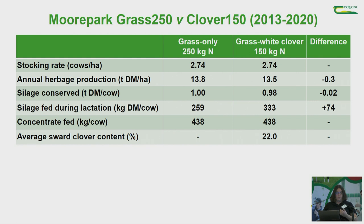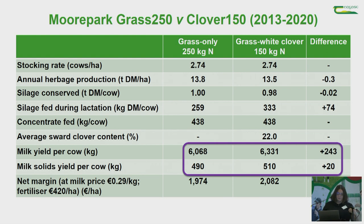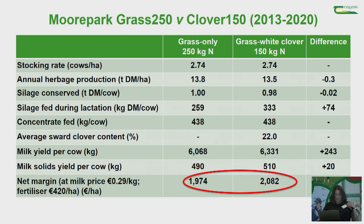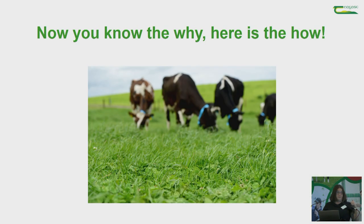Looking at milk production results: both milk yield and milk solids were increased when we had clover in the sward — an extra 243 kilos of milk yield and 20 kilos of milk solids per cow on the grass-clover treatment relative to grass only. Net margin was increased by 108 euros per hectare when analysed at a lower milk and fertilizer price than current. At current milk price and current protected urea price, that's actually about a 400 euro increase in net profit per hectare relative to the grass-only system.